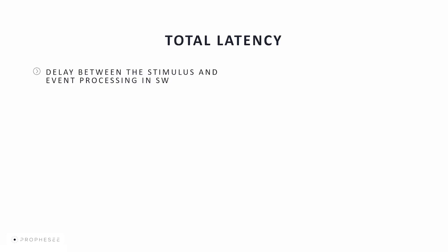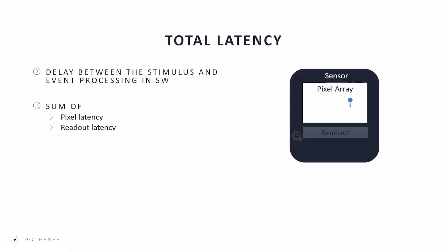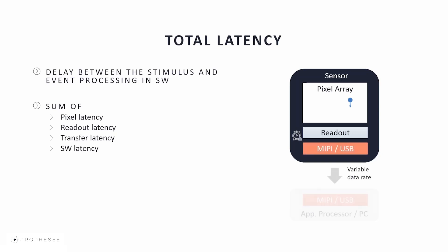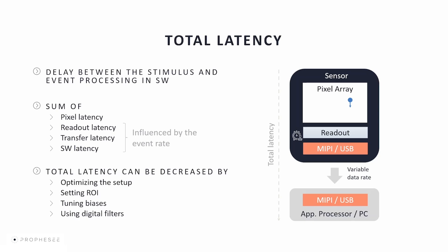Total latency should not be confused with pixel latency. Total latency is the delay between the change in the scene and event processing within software — it is the sum of pixel latency, readout latency, data transfer latency, and software processing latency. The last three are influenced by event rate: higher event rates increase these latencies. Therefore, it's important to keep the event rate reasonable by optimizing setup with ROI changes, tuning bias settings, and using digital filters. Note that digital filters are after the readout and won't affect readout latency. Timestamping is on the sensor chip, so event detection accuracy is not impacted by data transfer or software latencies.